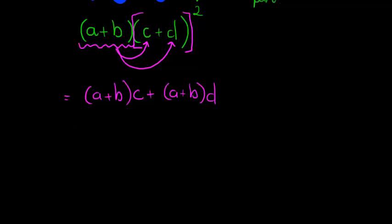You can do that as well, as I will illustrate here, because now I'm distributing from the back. Still, c is multiplying this whole bracket. So I'm going to say a times c, plus b times c, plus a times d, plus b times d. And there we go.